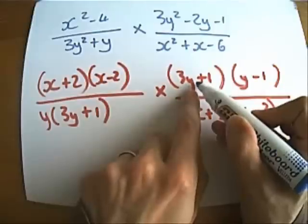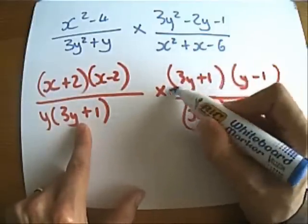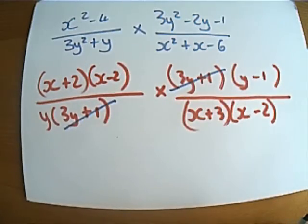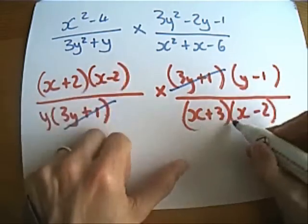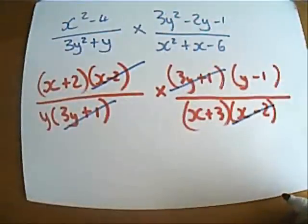Yes there is, 3y plus 1 on the top divided by 3y plus 1, they cancel out. x minus 2 on the top, x minus 2 on the bottom, so they cancel out.